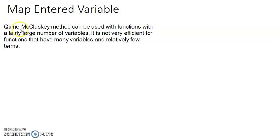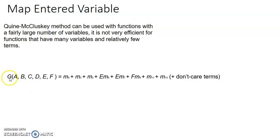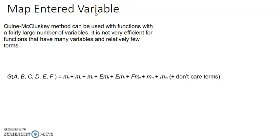The Quine-McCluskey method can be used with functions with a fairly large number of variables, but it is not very efficient for functions that have many variables and relatively few terms. For example, for the function g(a,b,c,d,e,f), when the number of elements for variables e and f are very few, Quine-McCluskey will not be very efficient. Then we go for the entered variable map.